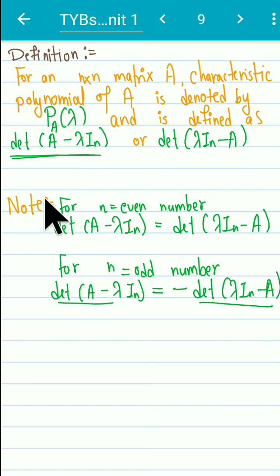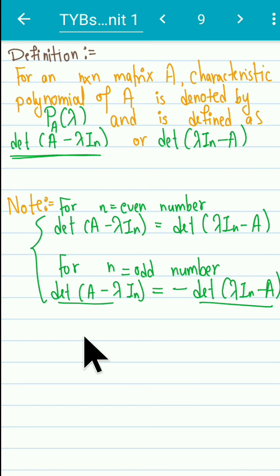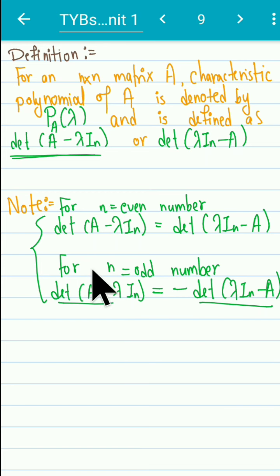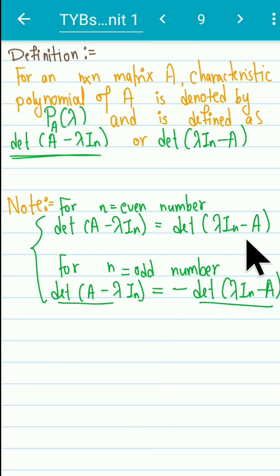This is an exercise for you: prove that when n is even these two forms are the same, and when n is odd there is a change in sign. This follows from properties of the determinant. If you cannot solve it, please write in the comment box.